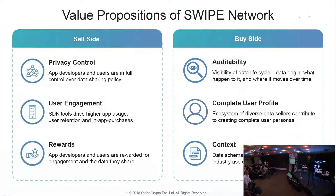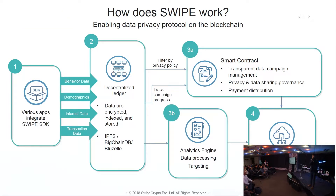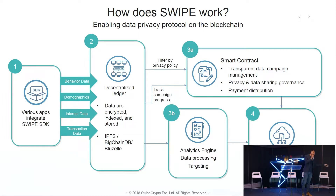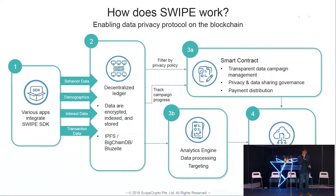We're going to introduce our value proposition and how Swype actually works. Basically, we want to put everything — behavior data, demographics, interest data — from different apps onto our decentralized ledger. We have a smart contract, which the video has explained. One thing to take note is that what is off-chain is our analytics engine, before we put all of this into a decentralized platform and marketplace.